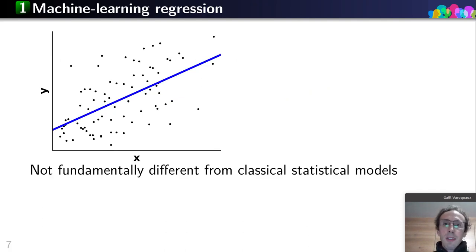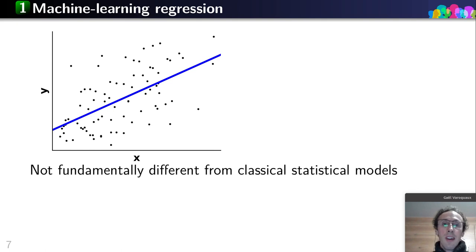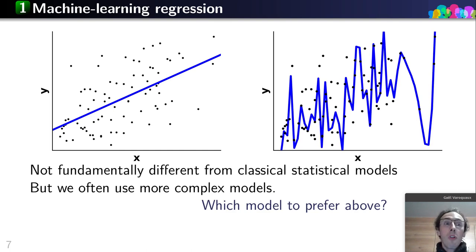We can look at a simpler problem — regression. I want to explain a variable Y, such as the age of someone, as a function of a variable X, such as the height of that person. I can fit a linear regression to this data, which is not fundamentally different from classical statistical models. I can also fit more complex models, and we often do. Now, which of these models should we prefer? One fits the data better — the wiggly line fits better than the straight line — but our intuition is that we should prefer the straight line.